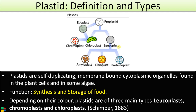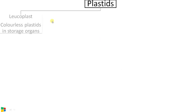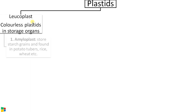There are three main types of plastids depending on the color: leukoplast, chromoplast, and chloroplast. First one is leukoplast. It is colorless plastids meant for storage — they are storage organs.